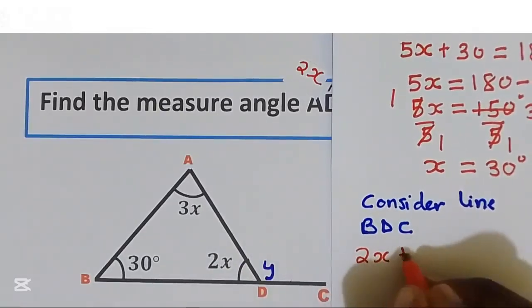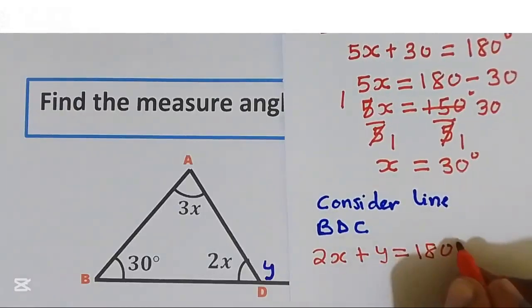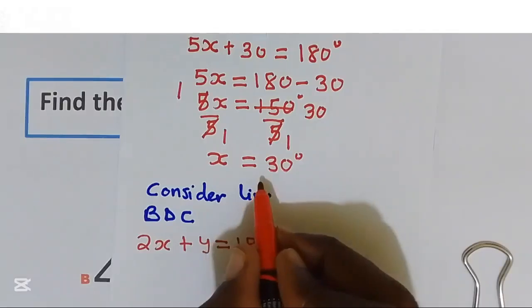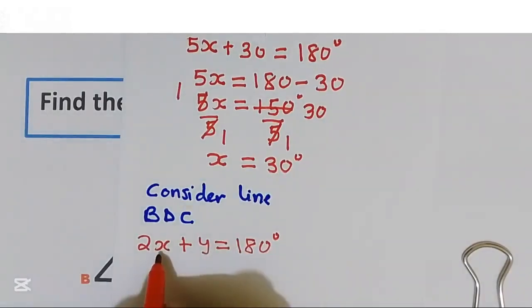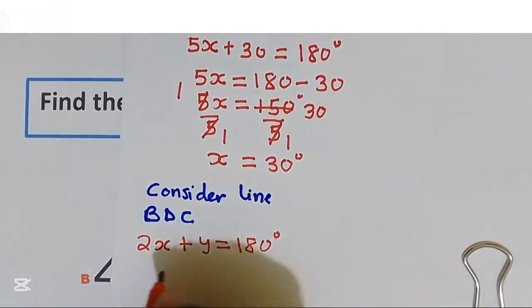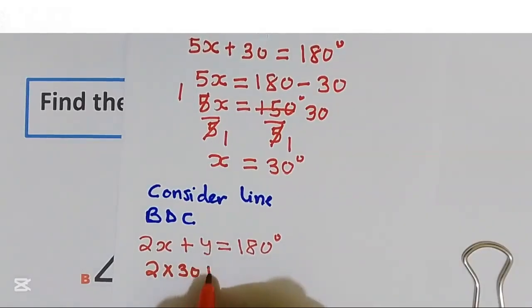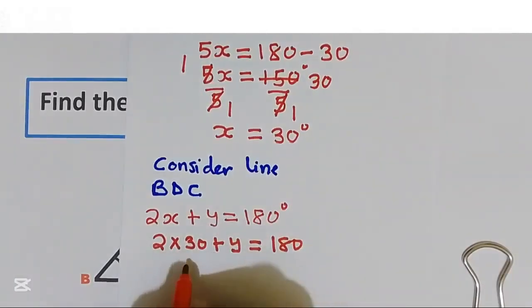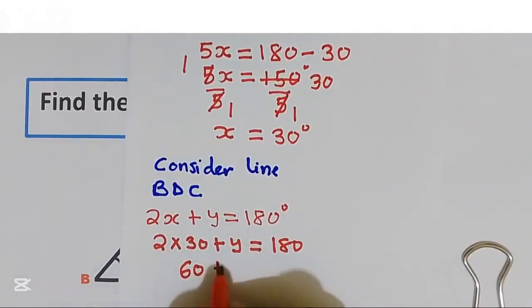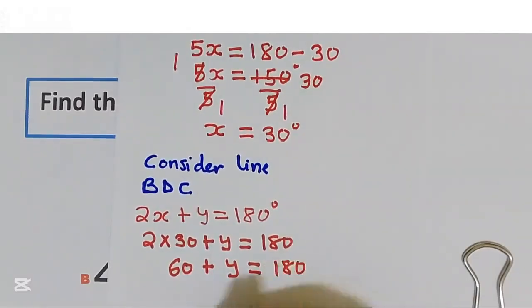2x plus y gives us 180 degrees. But we get the value of x equal to 30. I'm going to substitute the value of x equal to 30. That is going to be 2 multiplied by 30 plus y. This is equal to 180. That is 60 plus y. This is equal to 180. I'll bring 60 to the right hand side.